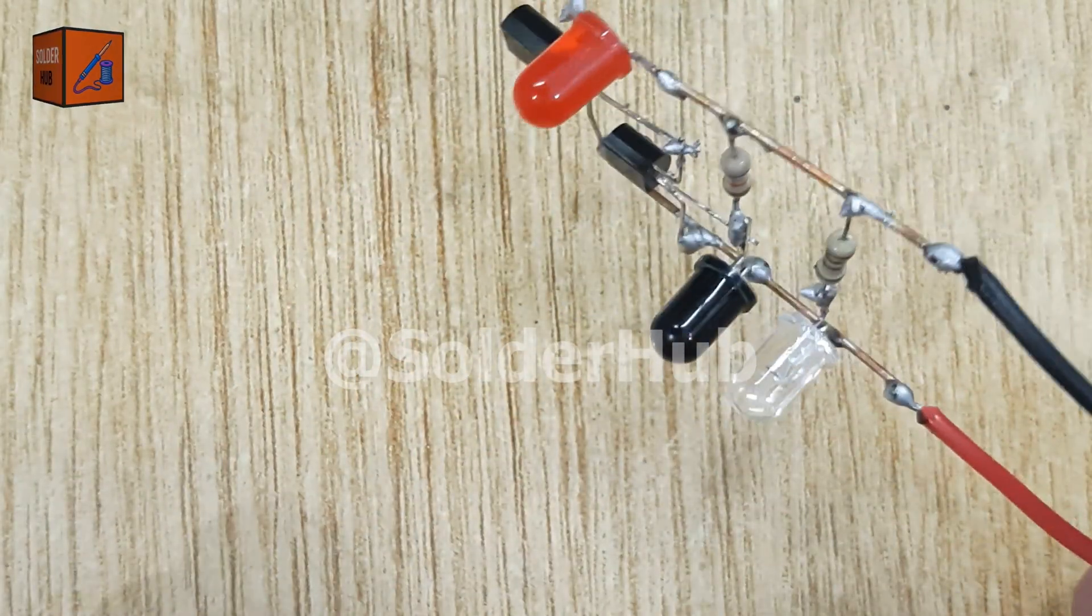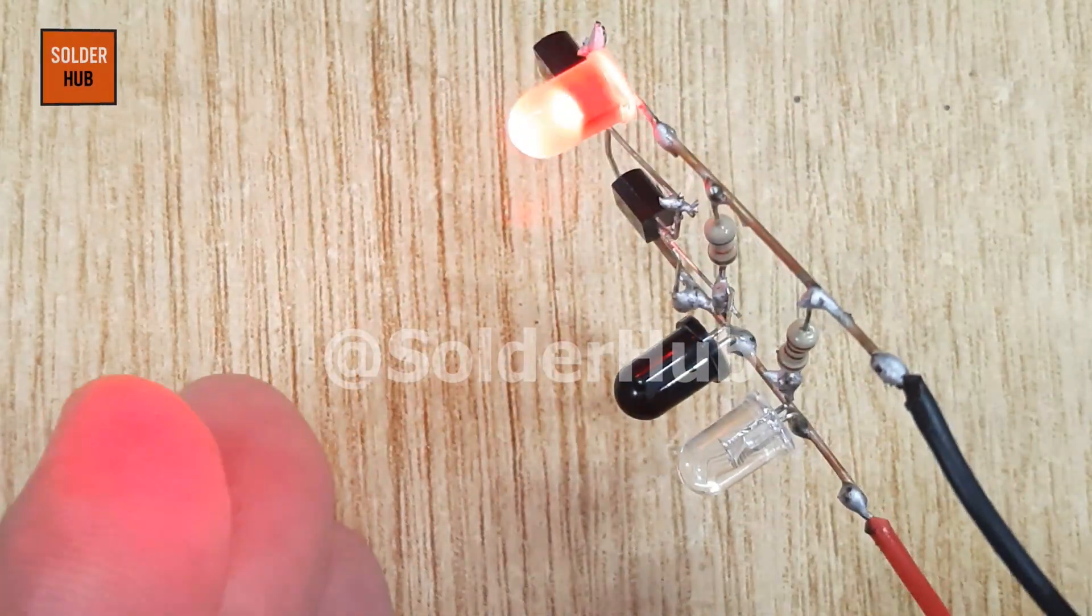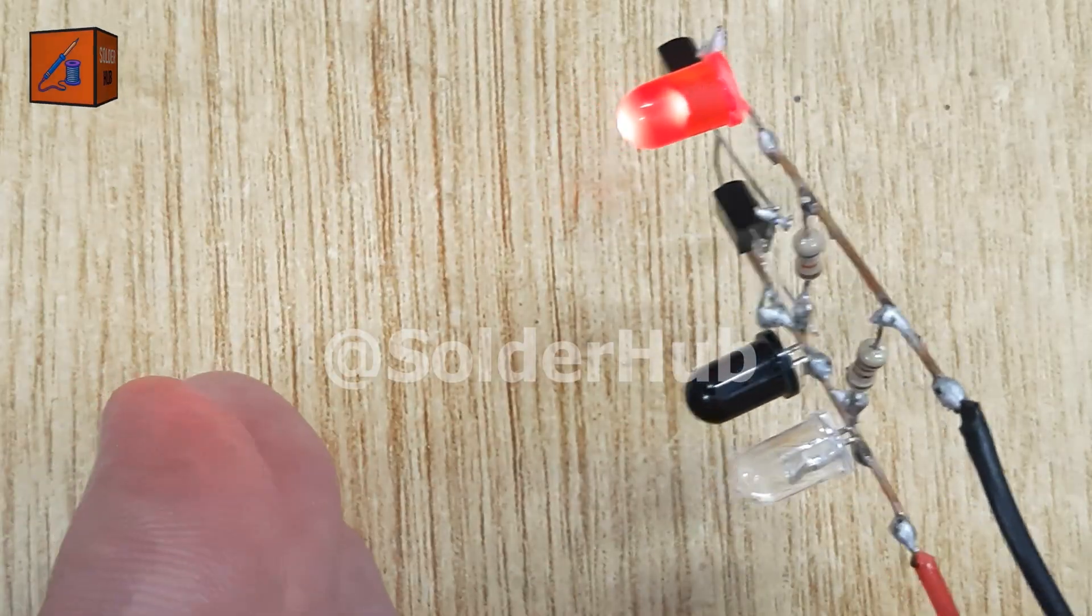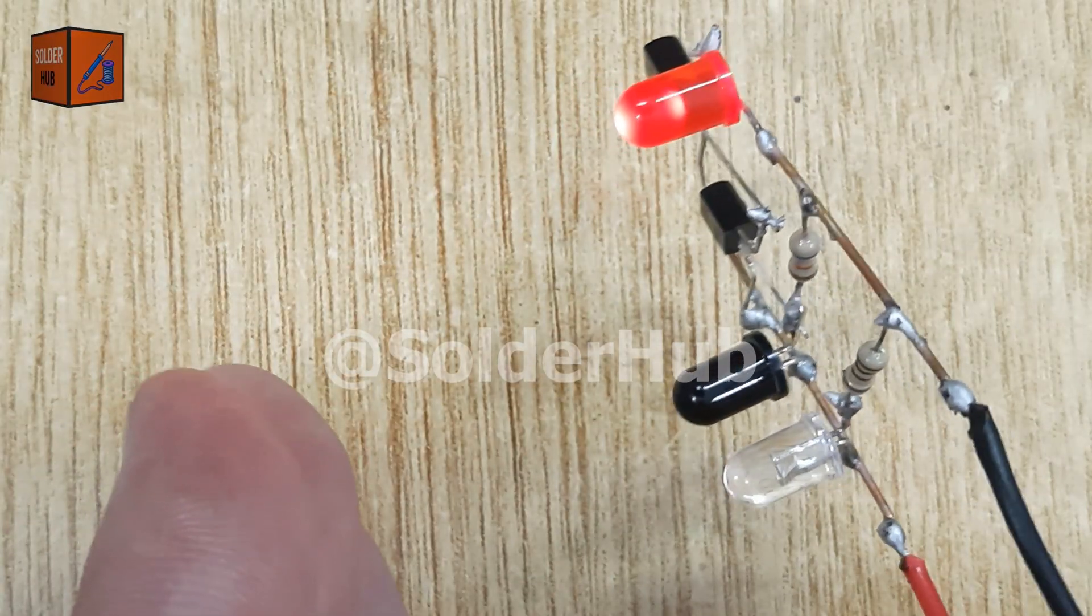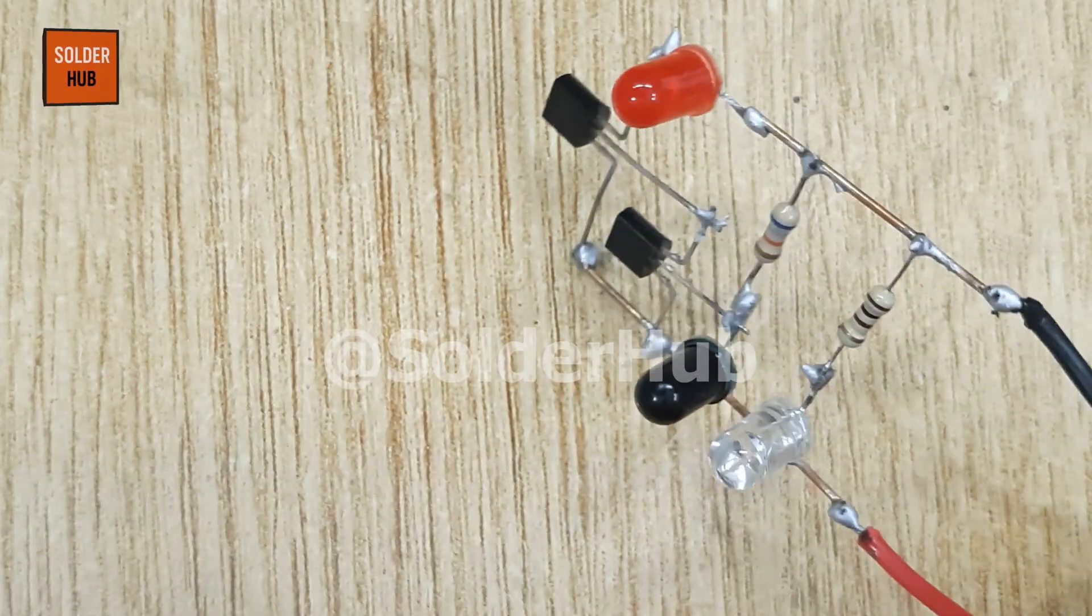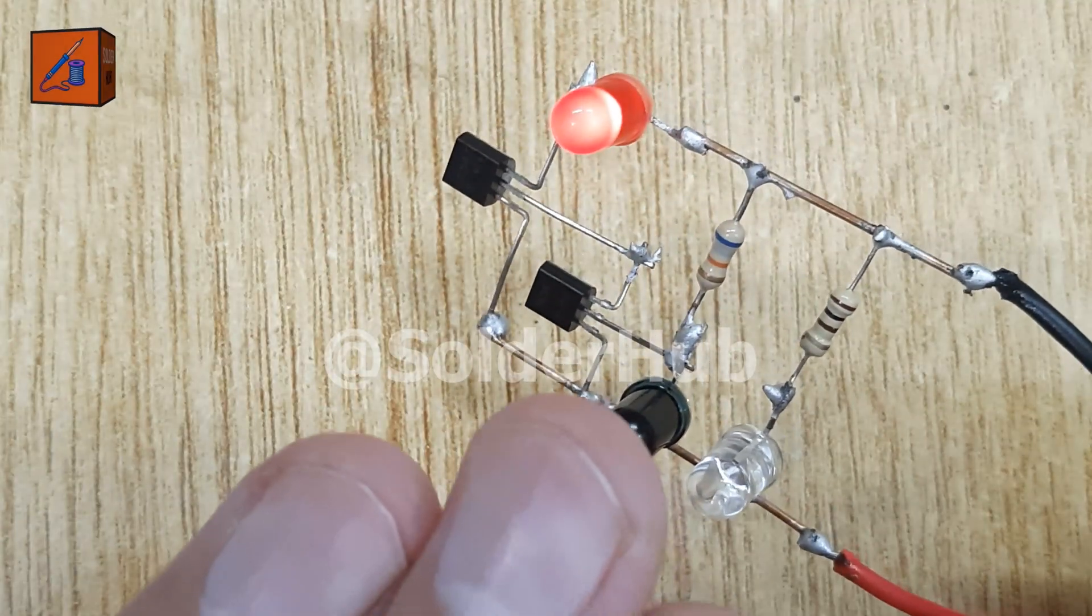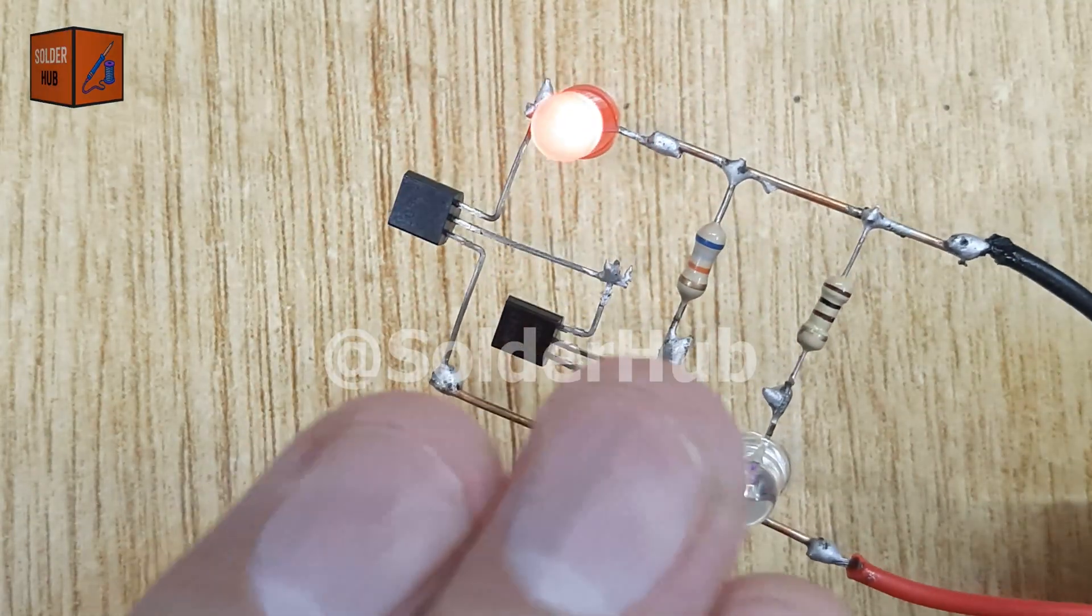The IR transmitter continuously emits infrared light. When an object comes close, this IR light reflects back and is received by the IR receiver. That tiny signal is amplified by our transistor pair, which then powers the LED.